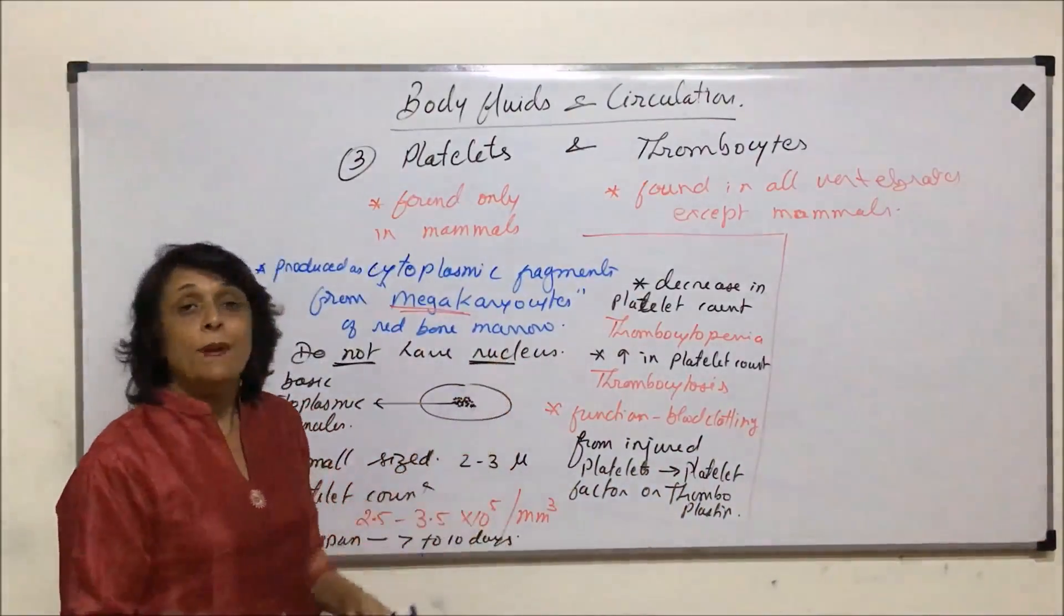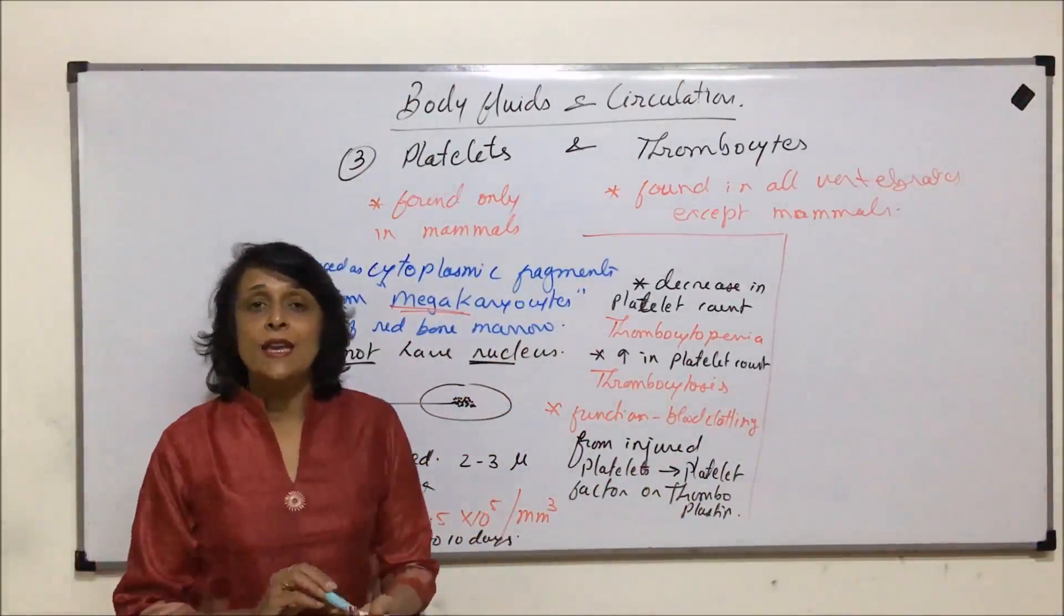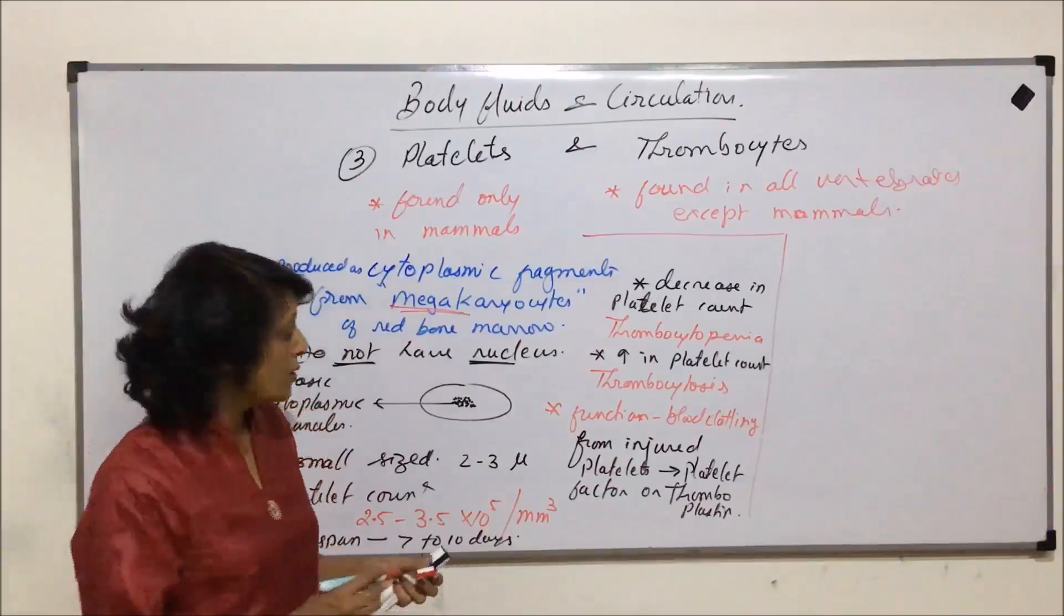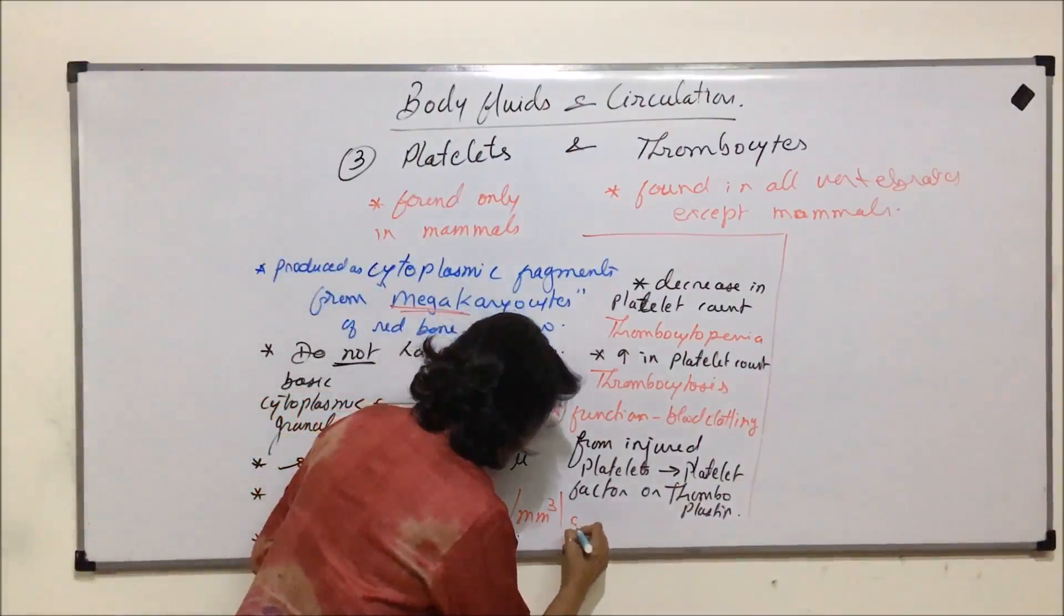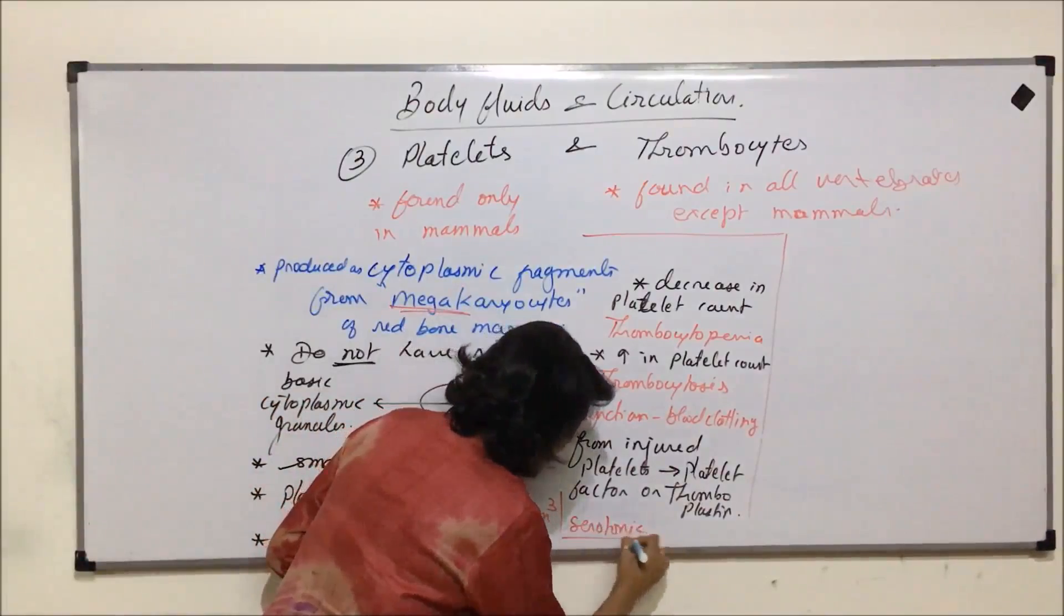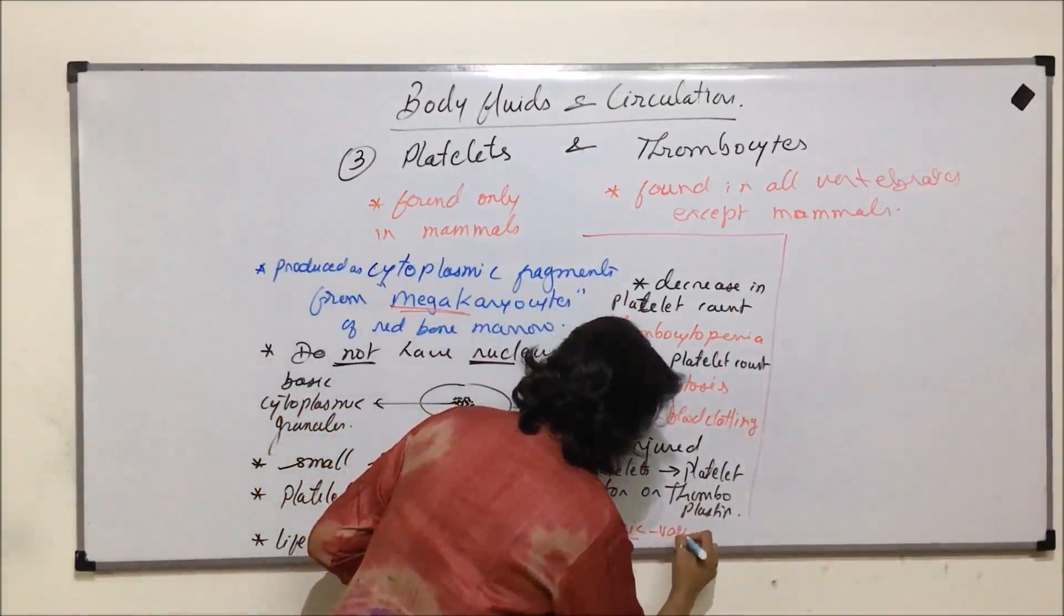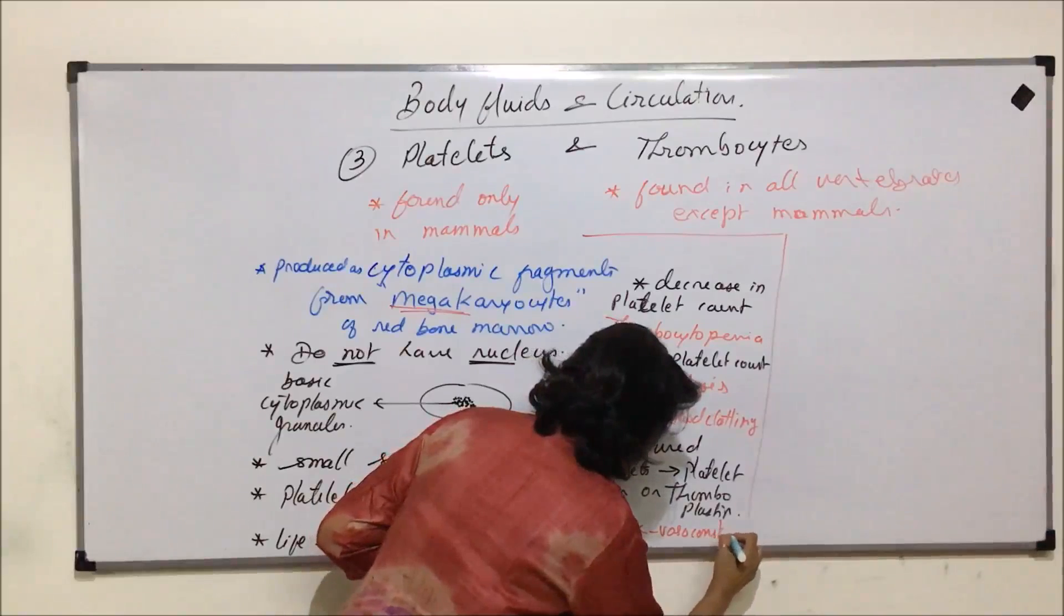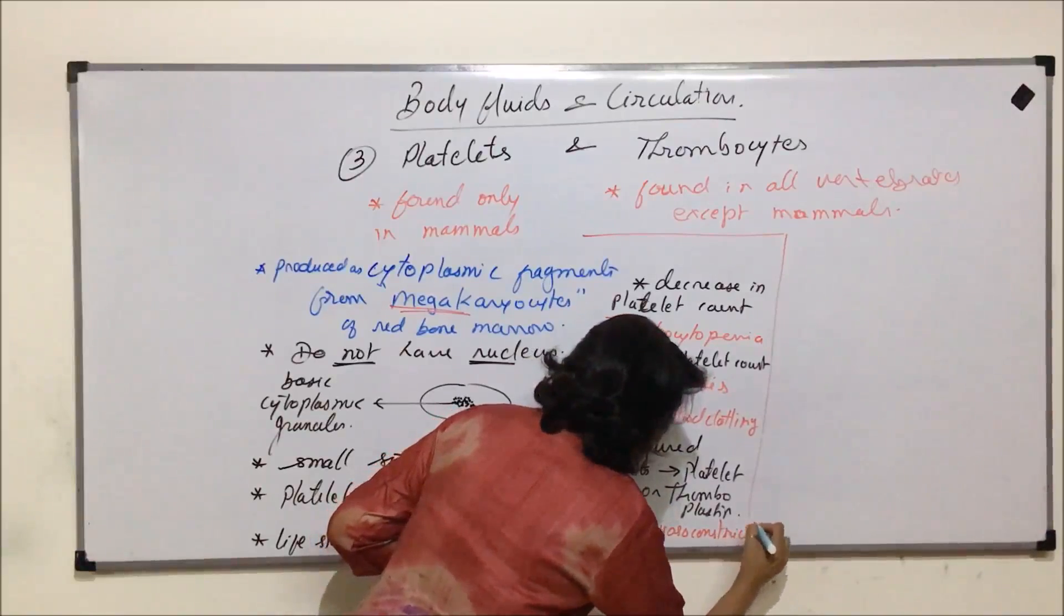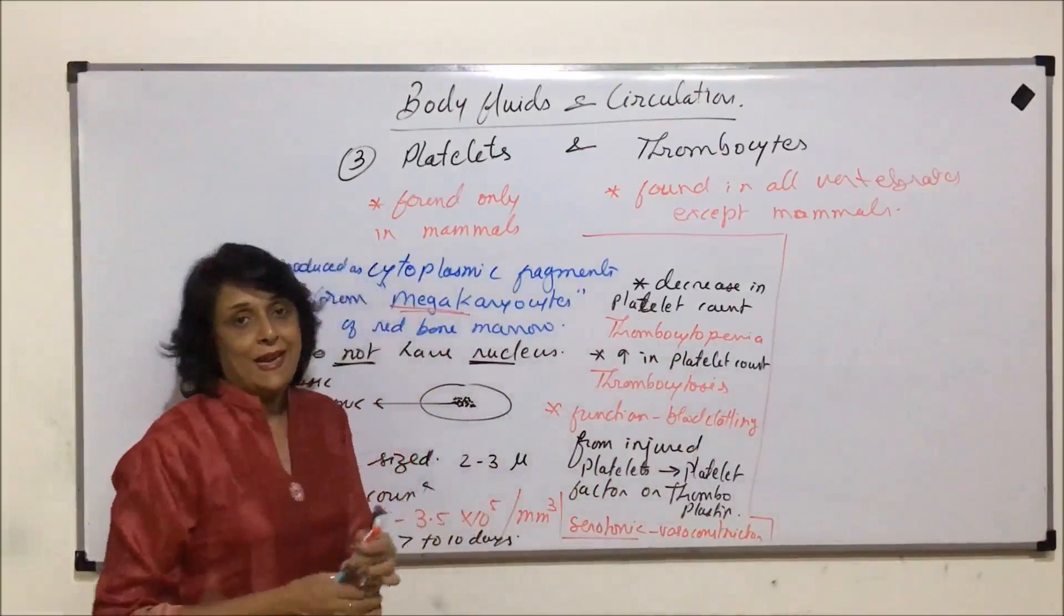Platelets also release a substance known as serotonin. This serotonin is a vasoconstrictor which is also released from platelets.